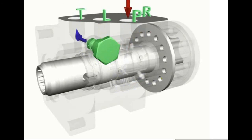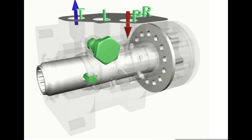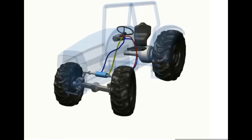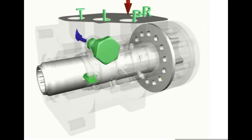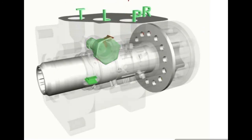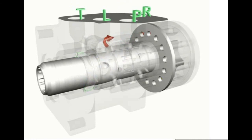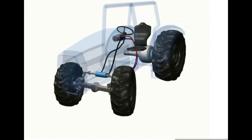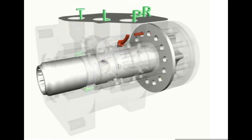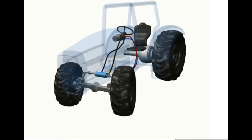The relief valve flow passes through the P port to the T port of the unit and flows to the reservoir. Fluid flow is routed to the steering cylinder and turns the wheels to the left. Rotation of the steering wheel clockwise reverses the flow path through the unit and turns the wheels in the opposite direction.